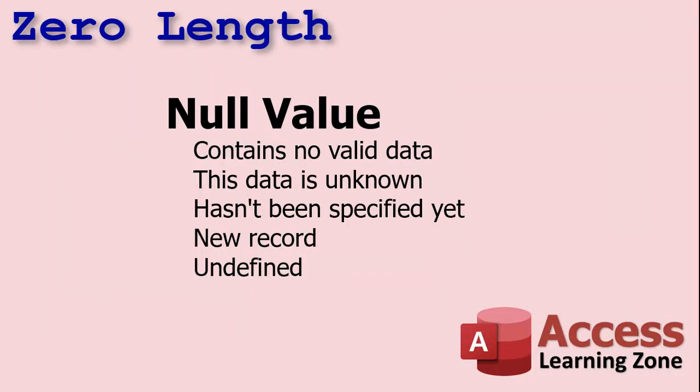So let's talk about the difference between null and zero length strings. A null value means that this field contains no valid data — the data is unknown, it hasn't been specified yet. You get this when you enter a new record. You start creating a new record, you type in the first name — at that point, last name is null. You haven't entered it yet; you don't know what it is according to the computer. It's undefined. That's a null value — there's no data.